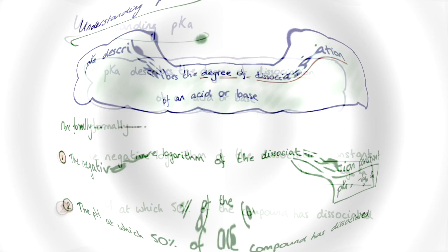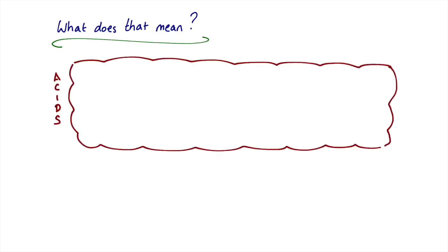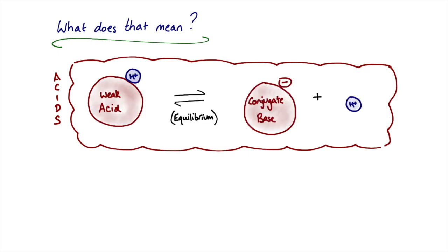Taking the example of a weak acid — weak acids partially dissociate, unlike strong acids which fully dissociate — the weak acid starts associated with H⁺. Since acids are proton donors, the weak acid can dissociate, releasing H⁺ and producing its negatively charged conjugate base. At equilibrium, the relative amounts of weak acid and conjugate base are determined by their relative stabilities.